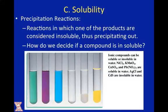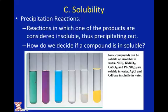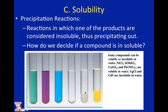Now, precipitation reactions. We have several general classes of reactions: redox, precipitation, and so forth. Precipitation reactions are simply double replacement reactions that form a precipitate, in which one of the products is considered insoluble, thus precipitating out. For example, nickel chloride, potassium permanganate, copper sulfate, and lead nitrate are all soluble — you see color dispersed throughout. Silver chloride and cadmium sulfate are insoluble and form a precipitate at the bottom of the test tube.